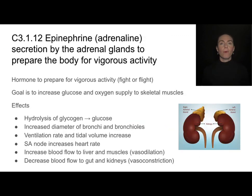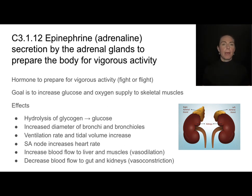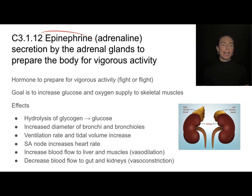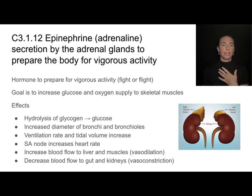Epinephrine is another example of a hormone that helps to integrate several body systems. Some people may refer to epinephrine as adrenaline — it's called adrenaline because it is secreted by the adrenal glands that sit on top of our kidneys. You can use either word, epinephrine or adrenaline, though I recommend learning to recognize this hormone by the name epinephrine, as it's used more consistently. This hormone travels from the adrenal glands all throughout the body through our bloodstream to prepare for vigorous activity.